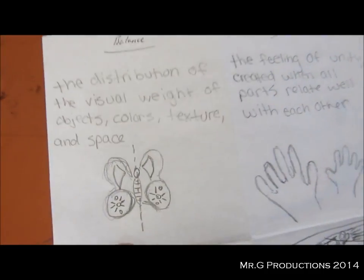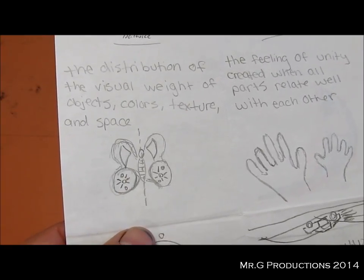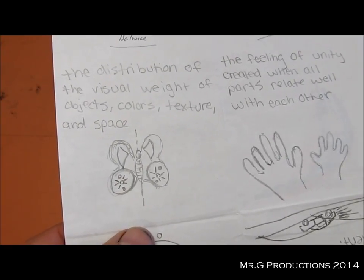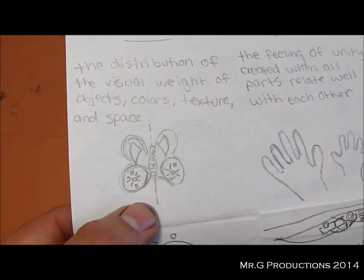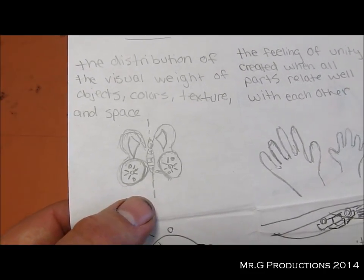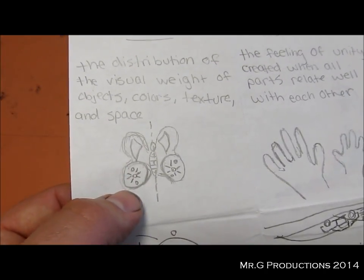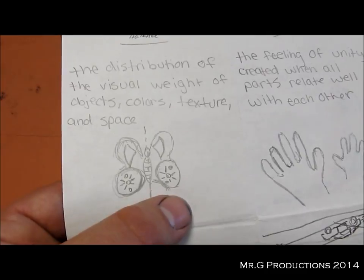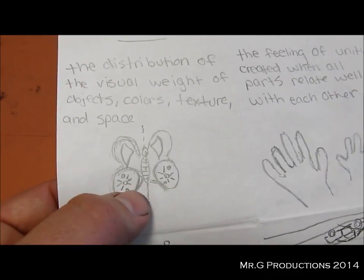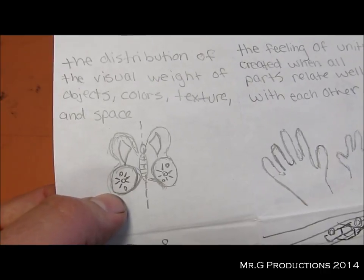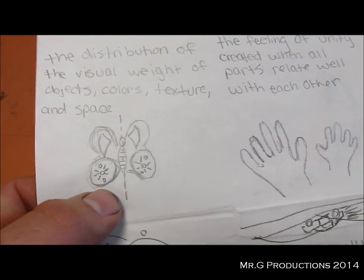Let's look at this wonderful picture of balance that we've got over here. All right, so balance, the distribution of visual weight in objects, colors, textures, and space. In this one, I've got a nice symmetrical design where I have a butterfly cut in half. On one side, you can see all the designs are still equally balanced on both sides. To also show the symmetry, that they're both the same on each side. So try and create something that illustrates balance in that respect.